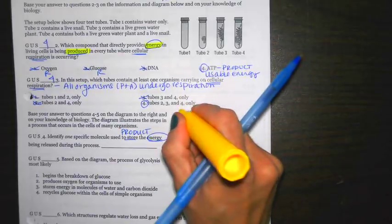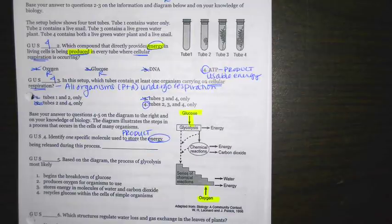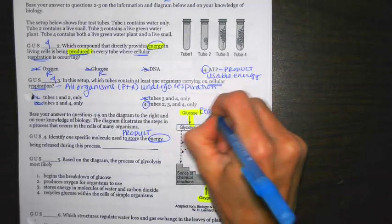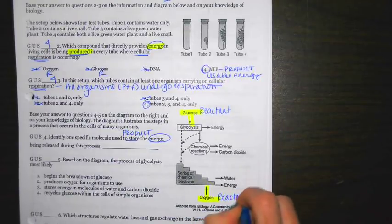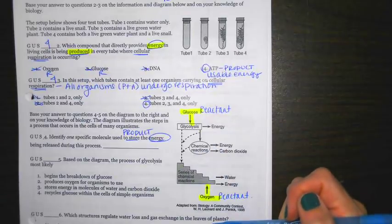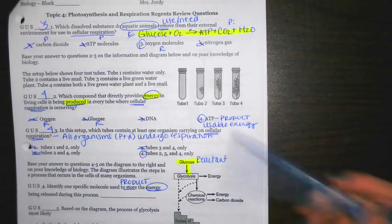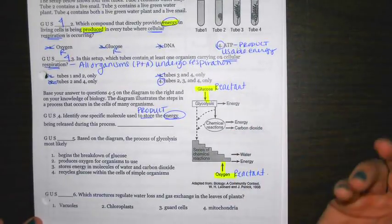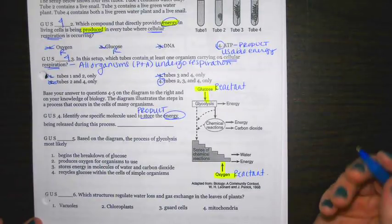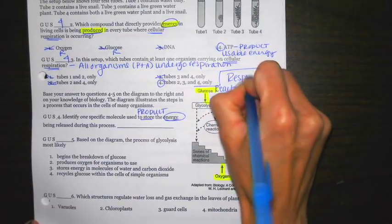Anything that has an arrow pointing in, those are all going to be examples of reactants. Now, once I see that those are all reactants, I can see that's glucose and oxygen. Again, go back up to that formula at the top that I wrote down. Oh, now I should be able to tell this is going to be an example of respiration. My advice is, make sure you write that down so that you know what formula is actually happening here. So this picture is respiration.